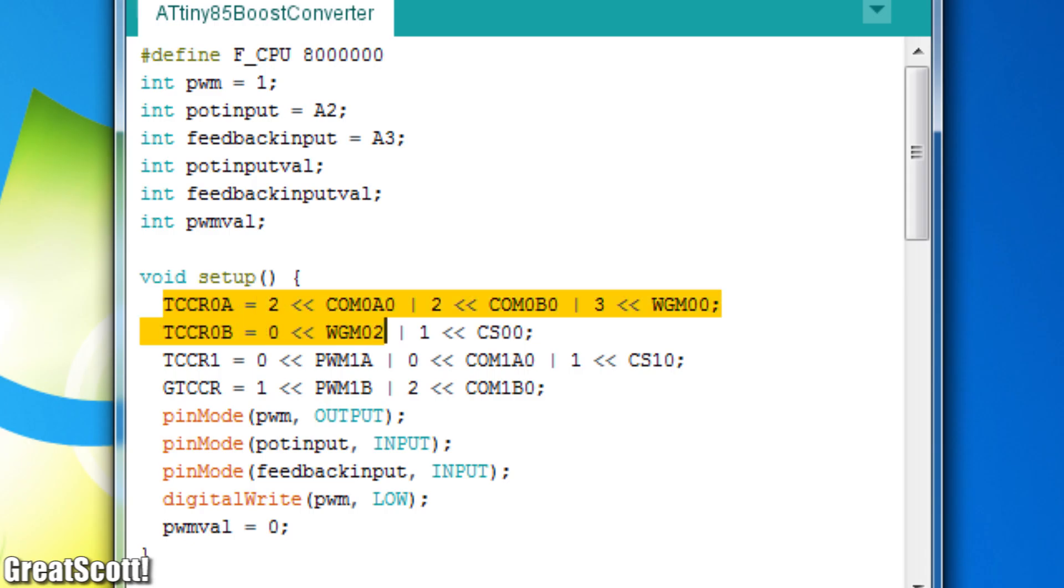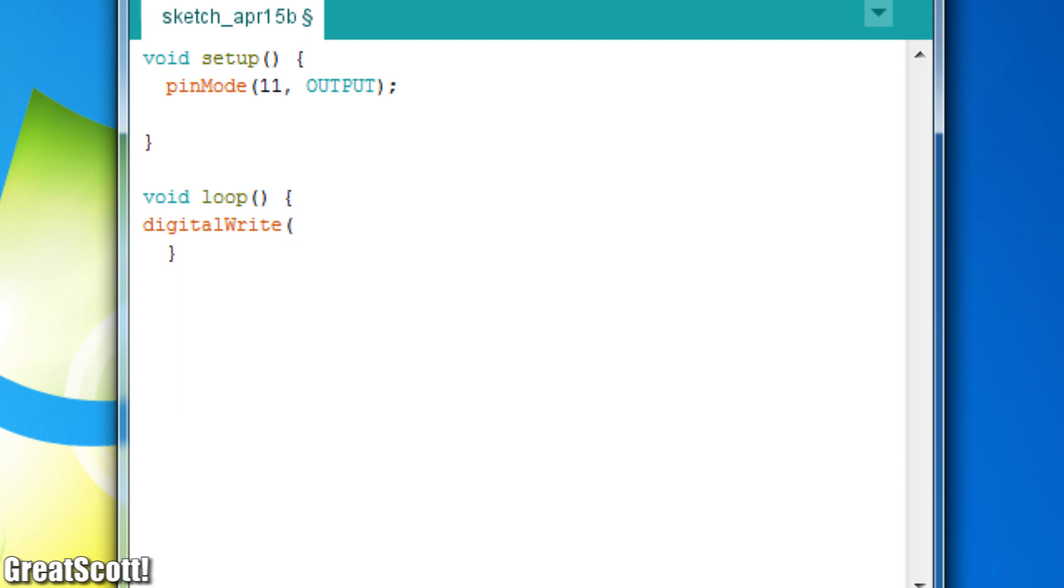Now let's move on to the weird lines of code you sometimes see in Arduino sketches. And to start off simple, let's write a short piece of code that turns the digital pin 11 on and then off again.